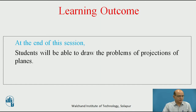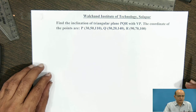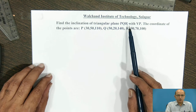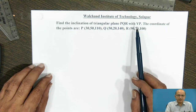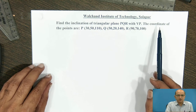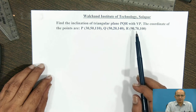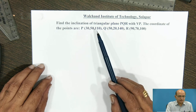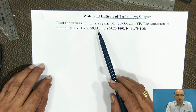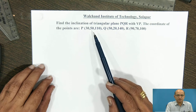Now let us consider the point coordinates are given. Here the example is one in which we have to find out the inclination of triangular plane PQR with the vertical plane VP. For this, the coordinates of the points given are P, Q and R. These three figures given in brackets indicate the position of points in the front view and top view on the coordinate systems, that is X and Y.